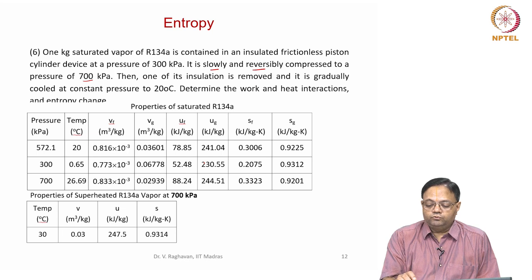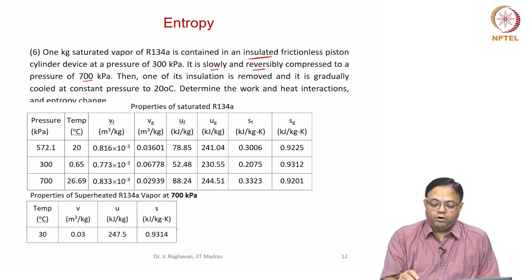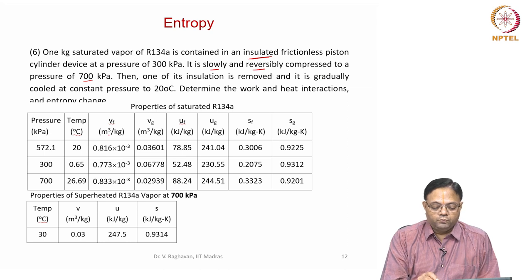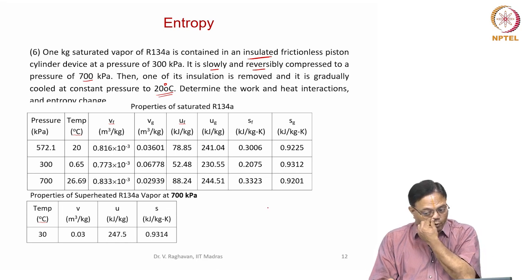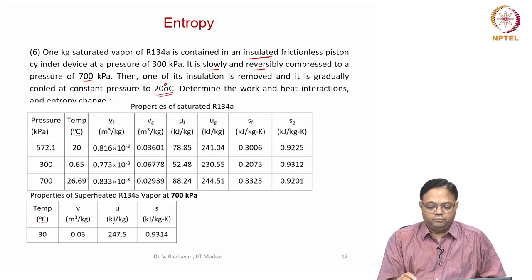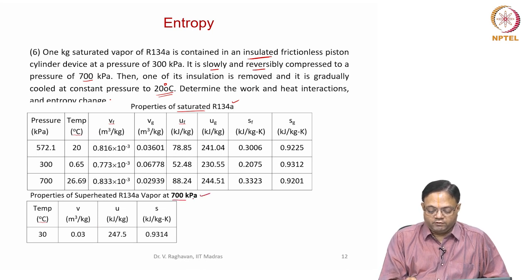The first process is slowly and reversibly compressed, and during this process it is insulated. Then one of the insulations is removed and it is gradually cooled at a constant pressure to 20 degrees centigrade. Determine the work and heat interactions and entropy change. The property tables for R134A are also given — the first table is the saturation table and the second one is the superheated table at 700 kilo Pascals.